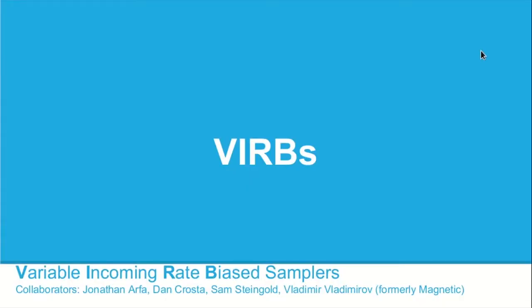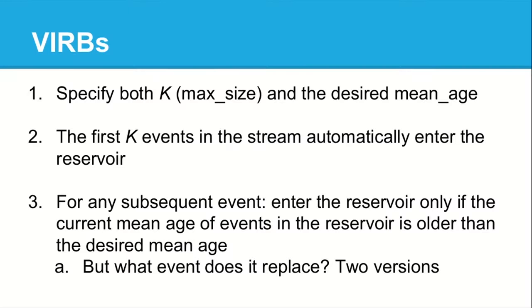Which brings us to the VERB, which is something we developed in-house. It stands for Variable Incoming Rate Bias Sampler. Variable Incoming Rate because, like in the simulation, in the real world the incoming rate can vary wildly, and it's biased. In addition to specifying k, we're also telling it how old we want the mean age in our reservoir to be. The first k events in the stream are added automatically.